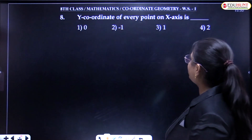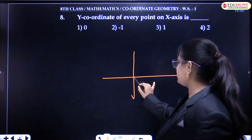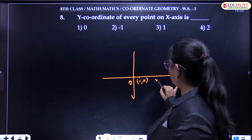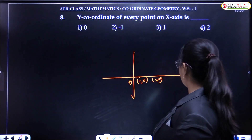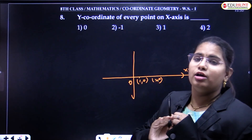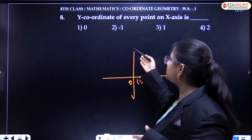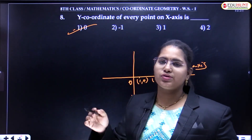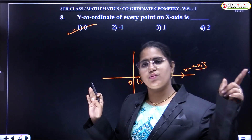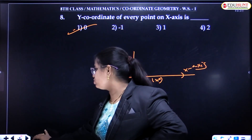Next question: what is the Y coordinate of every point on the X axis? For example, points on the X axis are (1, 0), (2, 0), and so on. Every point on the X axis has a Y coordinate of 0. If you are thorough with the concept, you can solve all these questions on your own. If you haven't watched the previous video, please watch it first before attempting these problems.